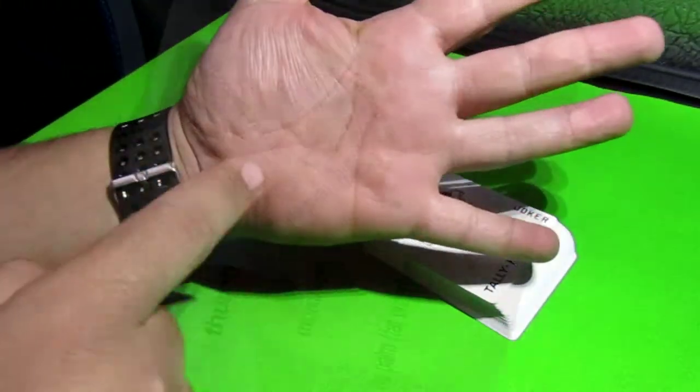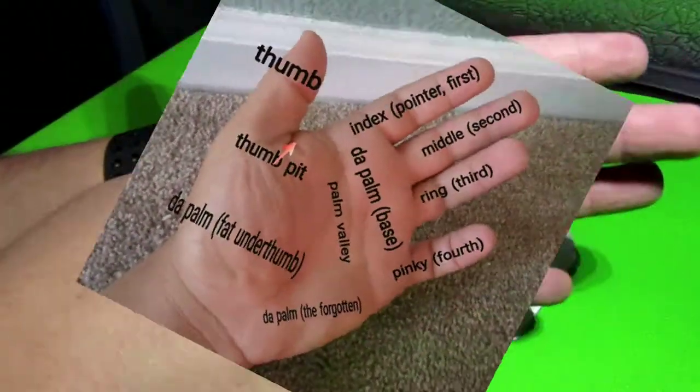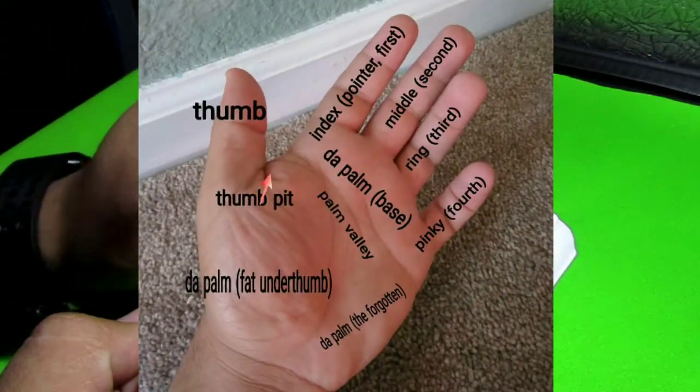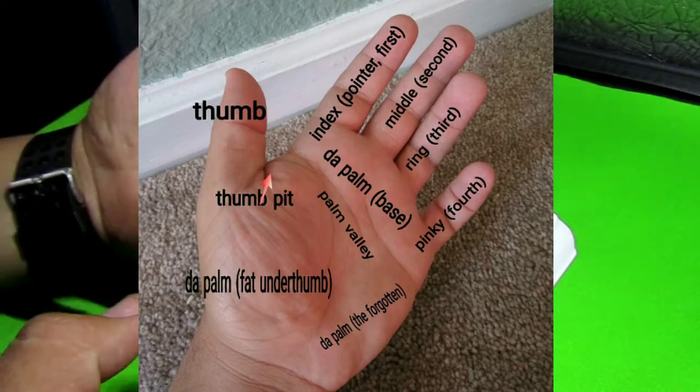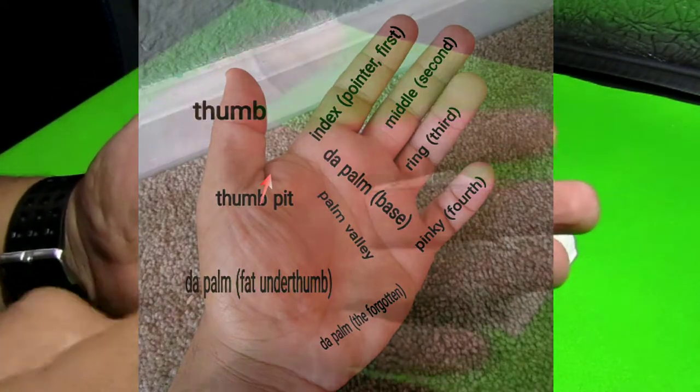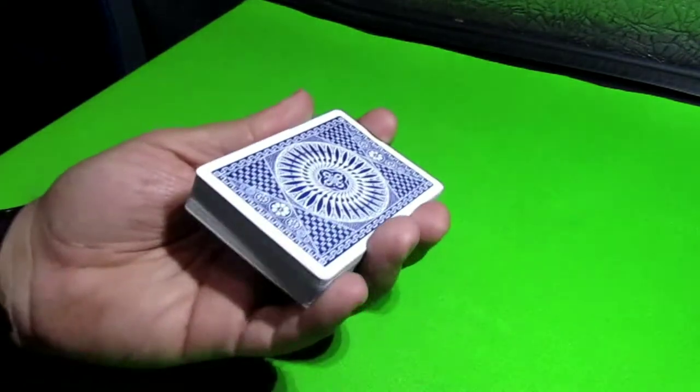But prior to this, let's look at the image of what a one hand looks like. The palm, we got the base, the thumb tip, the fat under thumb, the forgotten area, the pinky ring finger middle, all that good stuff.